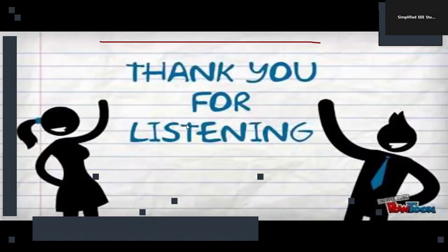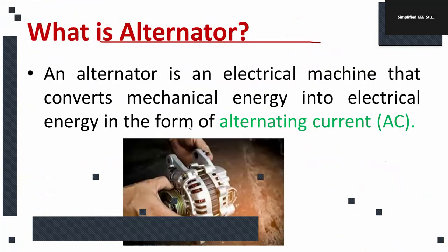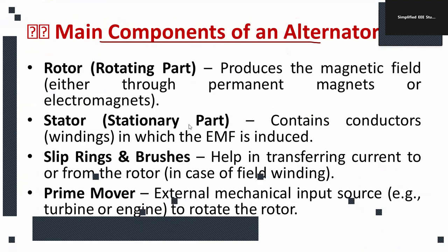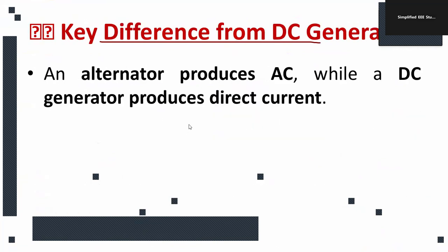In this video, we discussed what an alternator is, its definition, the basic principle of electromagnetic induction, and the four major components: rotor, stator, slip rings, and prime mover. We also covered its applications briefly. If you have any further questions, please ask in the comment box. Thank you for watching — happy learning, have a great day!